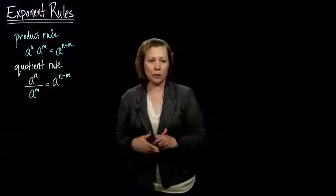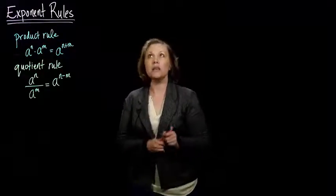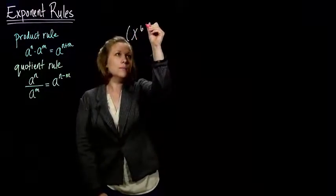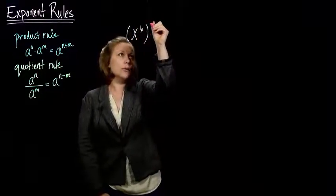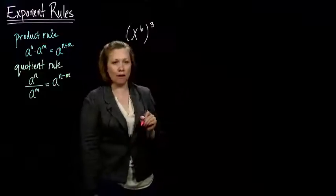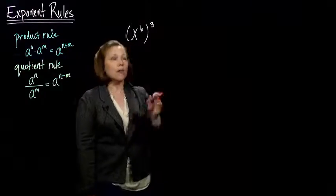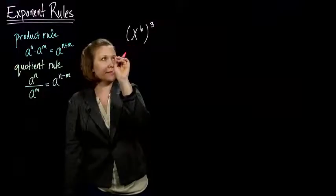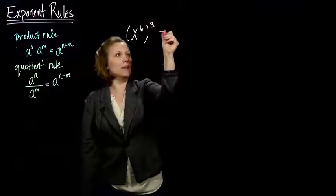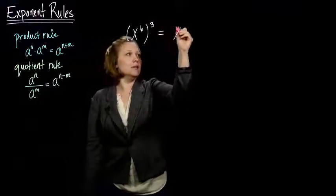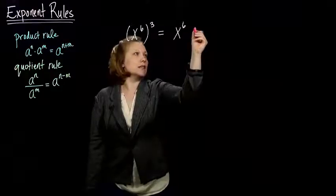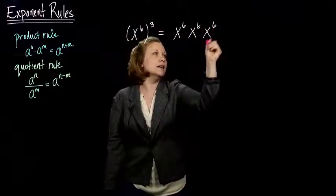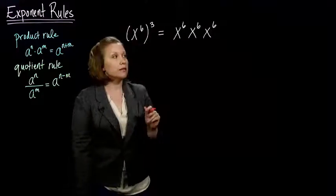The next rule we're going to talk about is called the power rule. If I have a number raised to a power and then raised to another power, the outside power tells me to take whatever's in the parentheses and multiply it by itself three times. So that gives me x to the sixth times x to the sixth times x to the sixth.